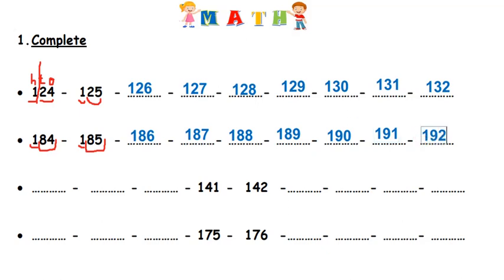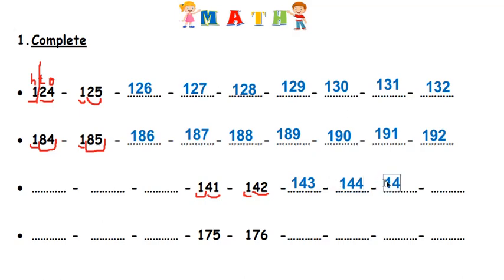Now the third sequence of numbers. I have here one hundred forty-one, and then one hundred forty-two. After forty-two it's forty-three, so one hundred forty-three. After forty-three, forty-four — one hundred forty-four. After forty-four, forty-five — one hundred forty-five. And then easy, one hundred forty-six.